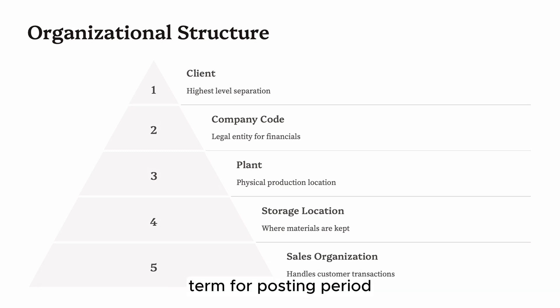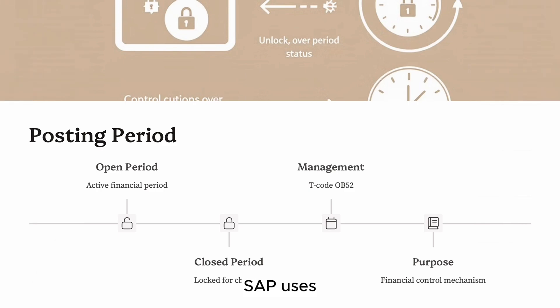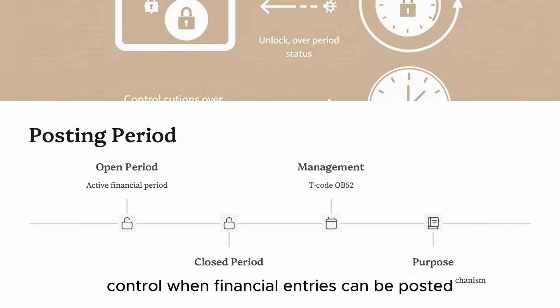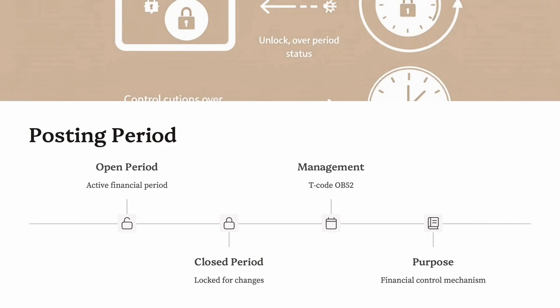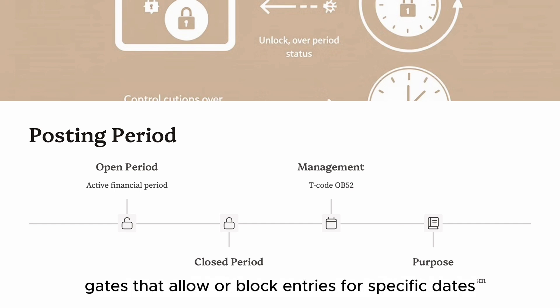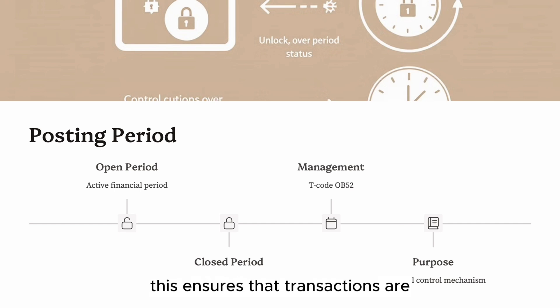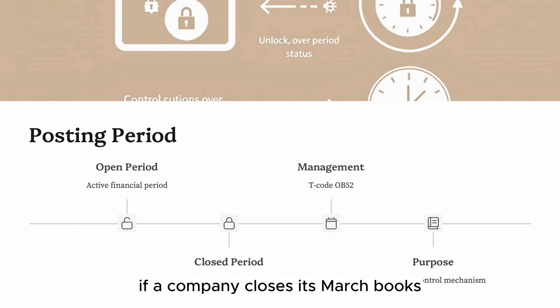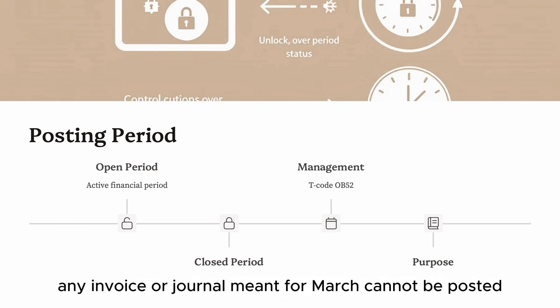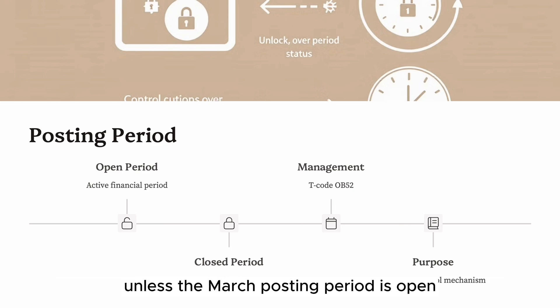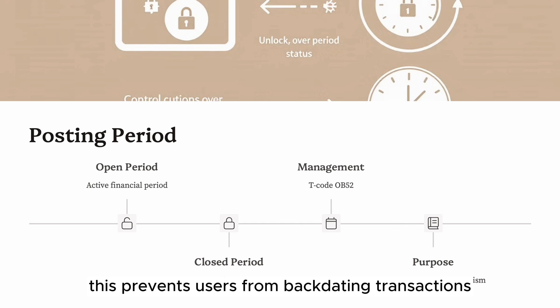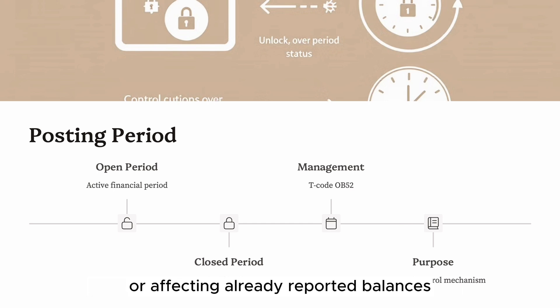Term four: Posting Period. SAP uses posting periods to control when financial entries can be posted. Think of them as financial calendar gates that allow or block entries for specific dates. This ensures that transactions are recorded in the correct fiscal month or year. Example: if a company closes its March books, any invoice or journal meant for March cannot be posted unless the March posting period is open. This prevents users from backdating transactions or affecting already reported balances.